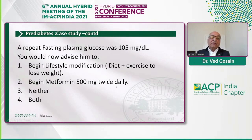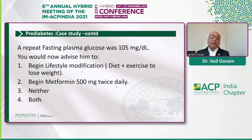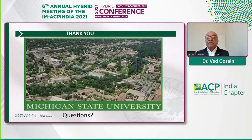It's somewhat controversial whether to add metformin at this point. Although the ADA now says he meets criteria being less than age 60, the Indian study of lifestyle with added metformin did not show additional benefit. I would probably put him on lifestyle modification, try it for three to six months, and if not showing significant effect I would add metformin — but I understand many of you may have other opinions. Thank you very much for your time and attention. I'll be happy to take any questions.